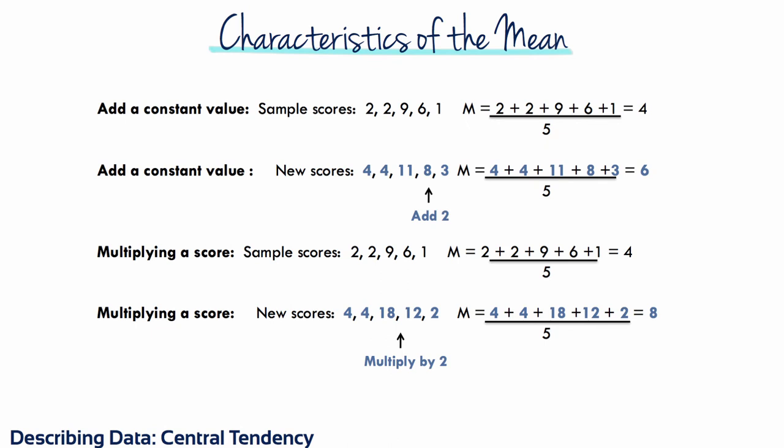Adding or subtracting a constant value to or from each score will add or subtract the same constant from the mean. So adding 2 to each of these scores is the same as adding 2 to the mean.